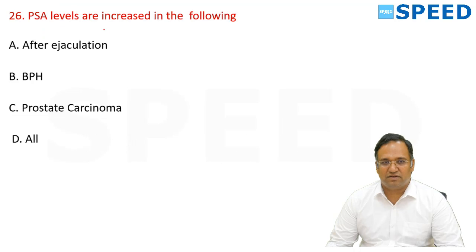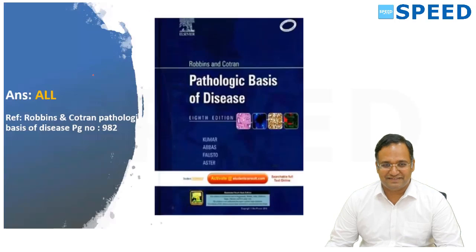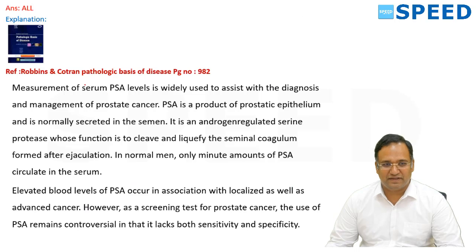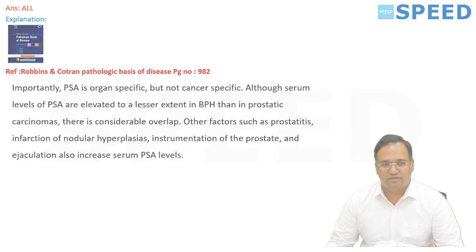PSA levels are increased in: after ejaculation, BPH, and prostatic cancer. If more than two answers are correct, the answer is all of them. Serum PSA measurement is widely used to assist in diagnosis and management of prostate cancer but can also be raised by conditions other than prostate cancer.